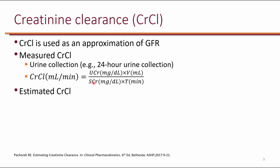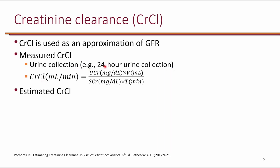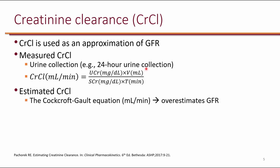We get a urine creatinine level as well as a serum creatinine level and use an equation to get the actual creatinine clearance. Collecting urine for 24 hours might not be practical; collecting over a shorter period, like 4 hours, is more practical but reduces accuracy. So another option is to estimate creatinine clearance using the Cockcroft-Gault equation, which typically overestimates GFR. Creatinine clearance is only intended to approximate GFR, so it is not an actual GFR.